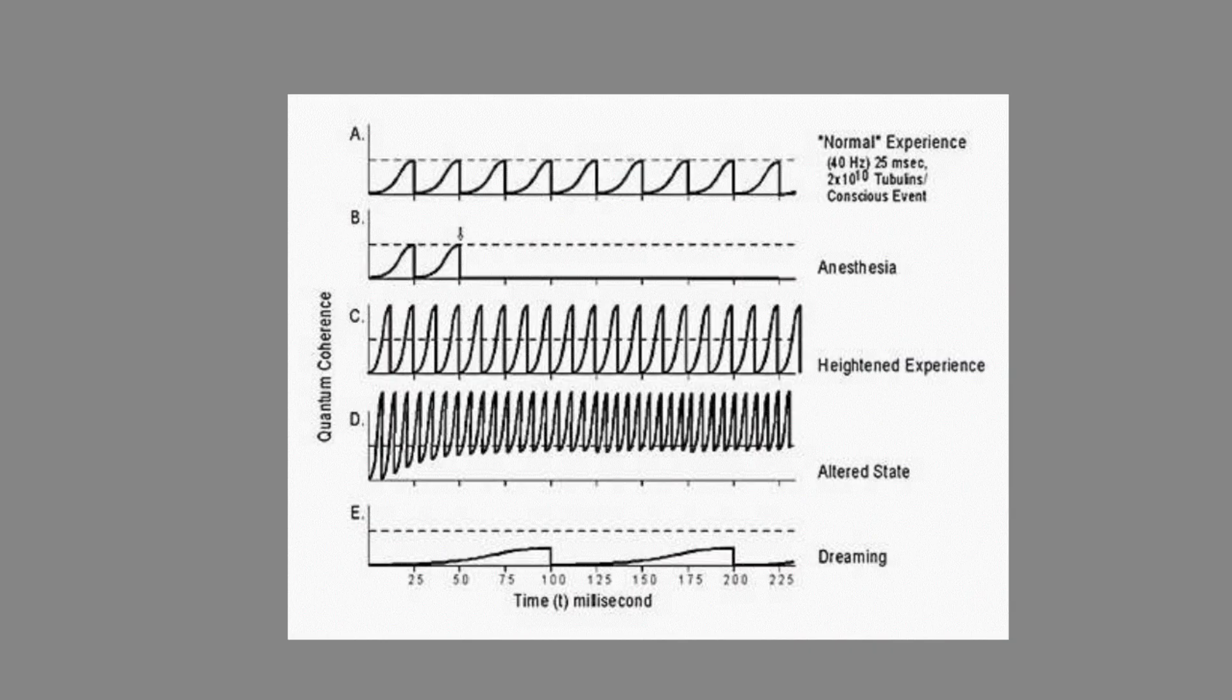Graph B shows the effect of anesthesia on consciousness. Anesthesia interferes with the electron mobility in the hydrophobic pockets of tubulin molecules, disrupting their ability to maintain superposition and consequently preventing the quantum collapses typical of conscious events. This disruption is consistent with the decreased EEG frequencies and loss of consciousness under anesthesia.